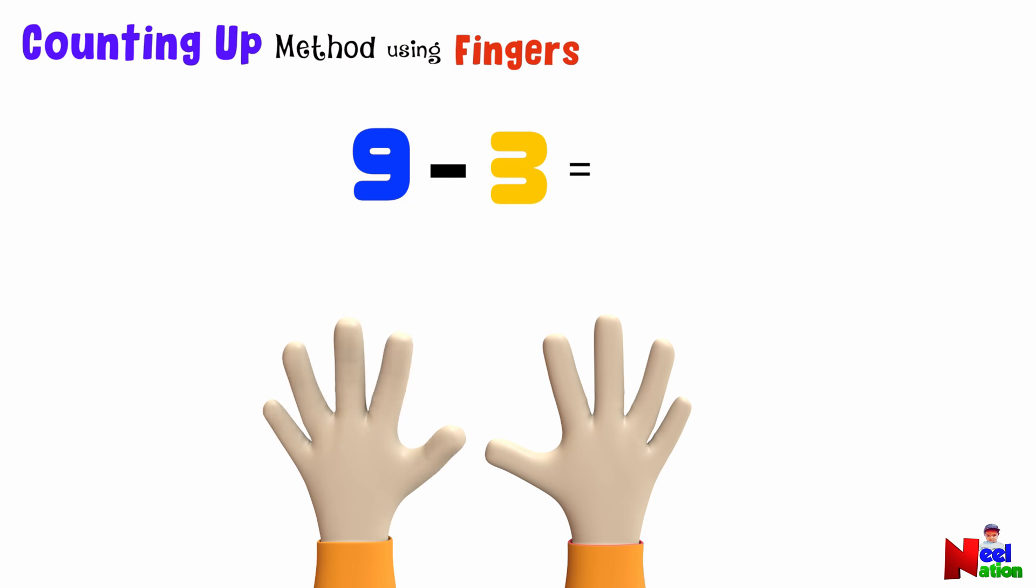After 3, we hold up one finger for 4, another for 5, another for 6, then 7, 8, and finally one more for 9. Now let's see how many fingers we have held up—6 fingers. So 9 is 6 numbers away from 3, meaning 9 minus 3 equals 6.